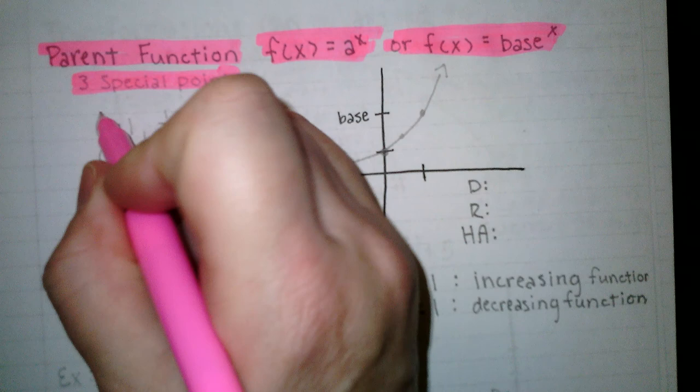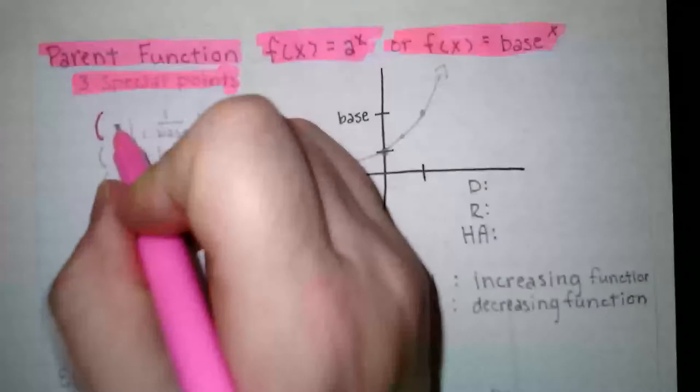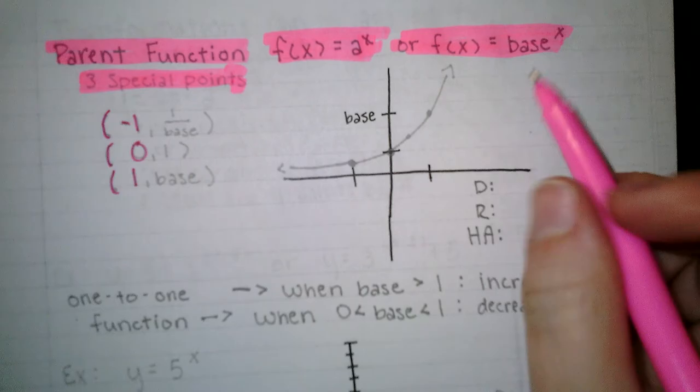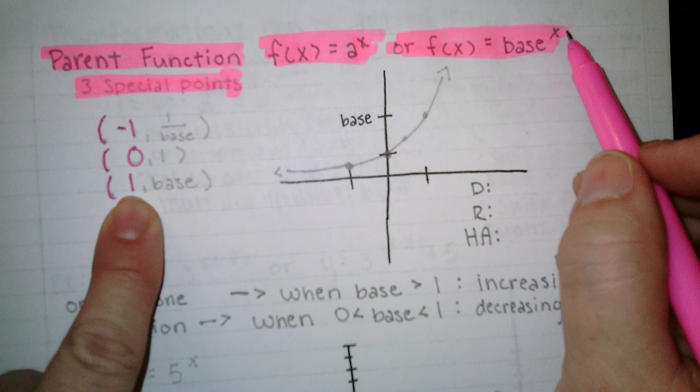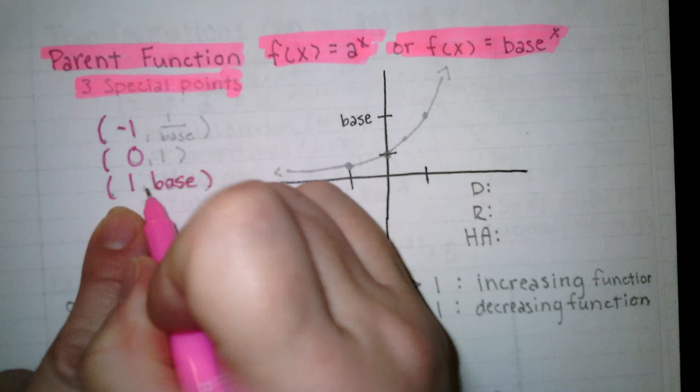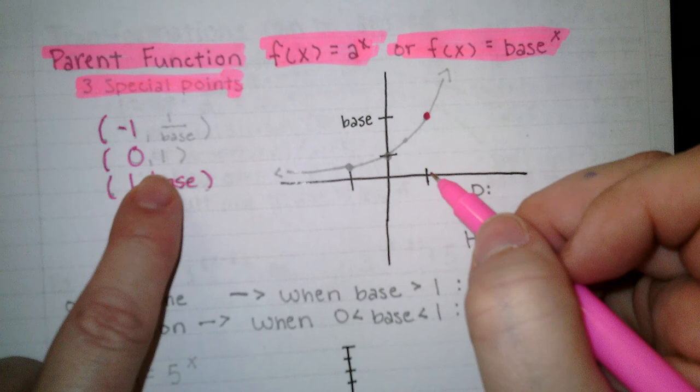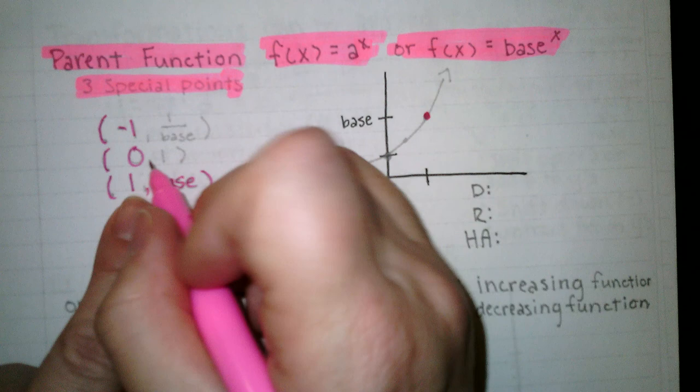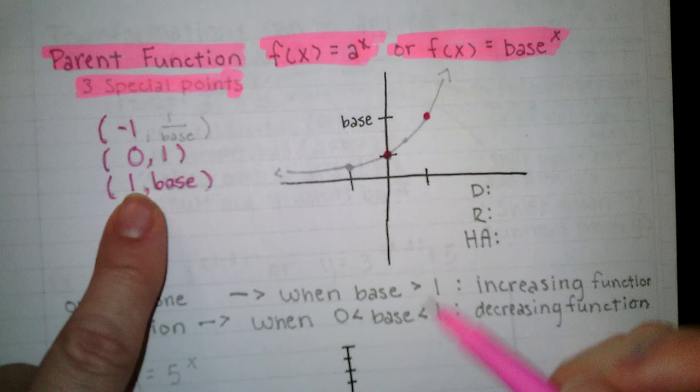But then the transformations are still going to apply to these. So our three special points are going to be negative 1, 0, and 1 for the x values. And then if you think about taking a base raised to the power of 1, we'll start with that one. A base raised to the power of 1 would just give us back the base. So it's going to be 1, whatever the base is. So if I mark this as my base, I'm going to go over to x equals 1, and 1 base is my ordered pair. If I put 0 in for x, then base raised to the 0 power would give me 1. So 0, 1 is on all of these functions before transformations.